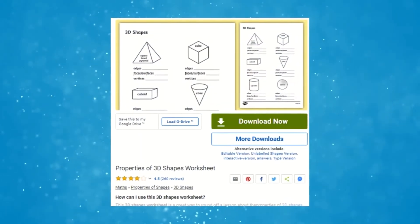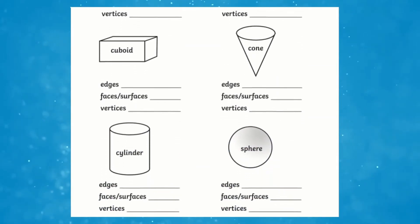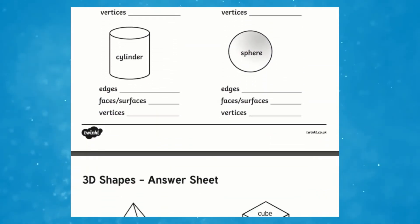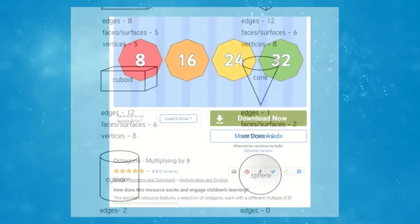Or this handy worksheet is perfect for helping children to identify the properties and learn about the different shapes and their names. This activity challenges your children to name the shapes and identify how many sides it has.